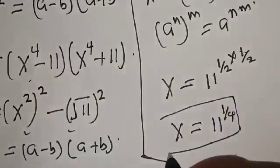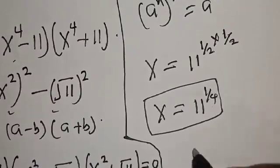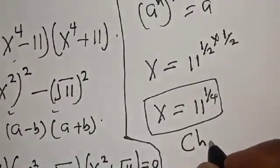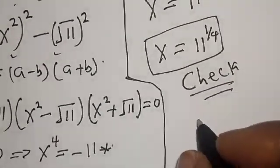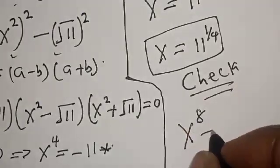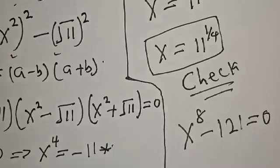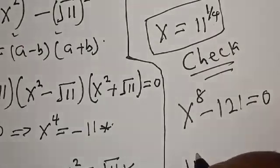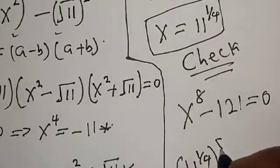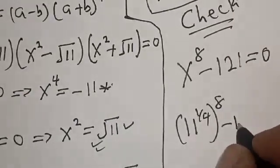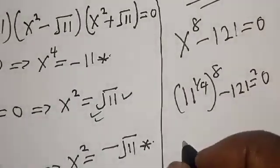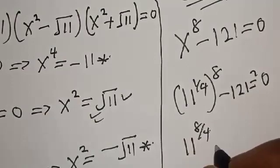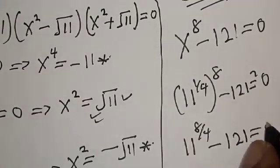That is our final answer. Let's check to confirm. The given equation is x raised to power 8 minus 121 equals zero, and x equals 11 raised to the power 1 over 4. Substituting: 11 raised to the power 1 over 4, raised to the power 8, minus 121 must equal zero. This is 11 raised to the power 8 over 4 minus 121, which must equal zero. Since 8 over 4 equals 2, we get 11 squared minus 121, which is 121 minus 121 equals zero. Confirmed.